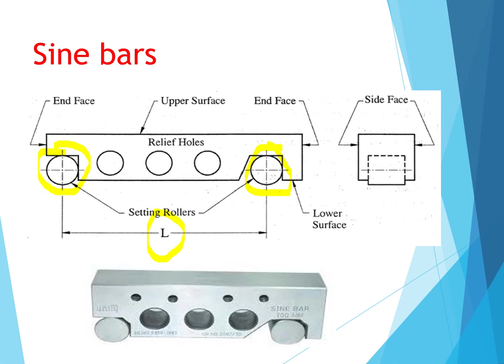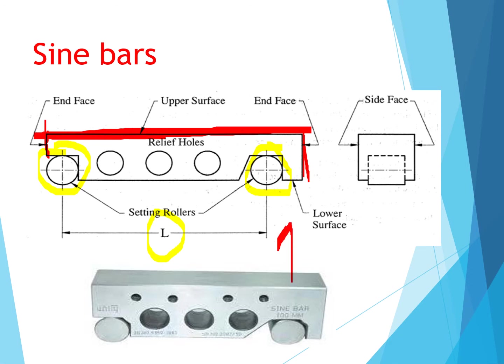The different parts of a sine bar include two end faces — you can see these two end faces in the diagram — and an upper surface. The workpiece is placed on the upper surface, and one end is lifted upward when finding out the angle.